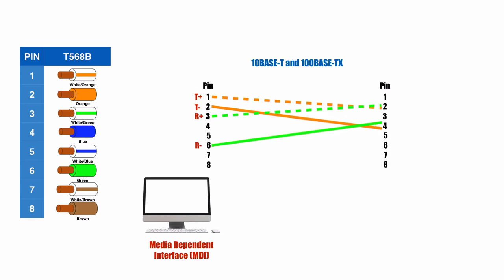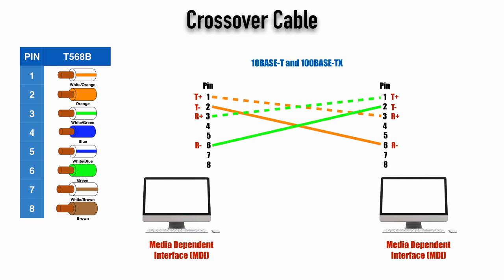One option is to use a crossover cable. We simply have to take the two transmit pins and instead of going straight over, we have to go down to pins 3 and 6. T+ still maps to R+, but since the pins are a mirror image of each other, the individual wires are not going to look the same on one end of the cable as the other. For example, the white-orange wire on one RJ45 connector shows up on pin 1, but on the other end of a crossover cable it shows up on pin 3. This is what a crossover cable looks like for 10BaseT or 100BaseTX, which only use two pairs of wires for data.